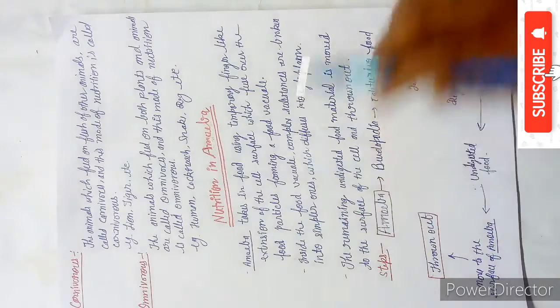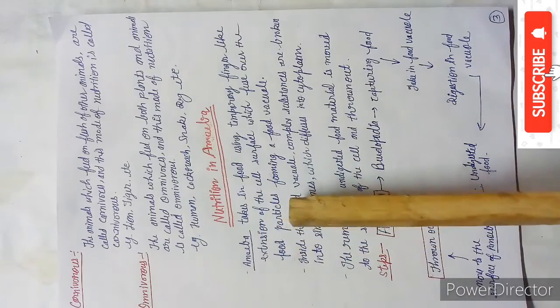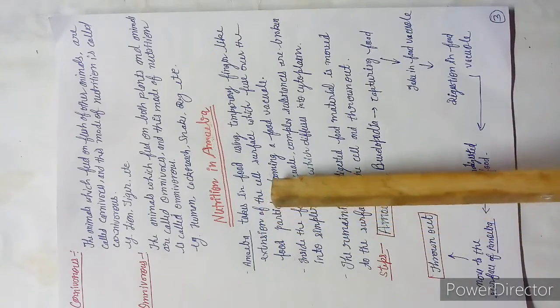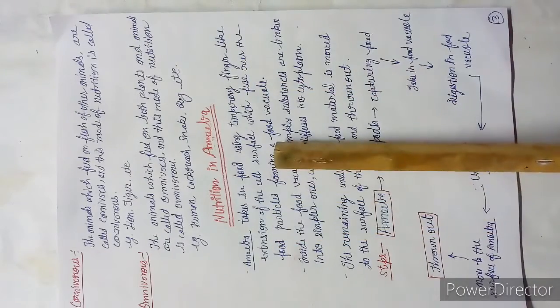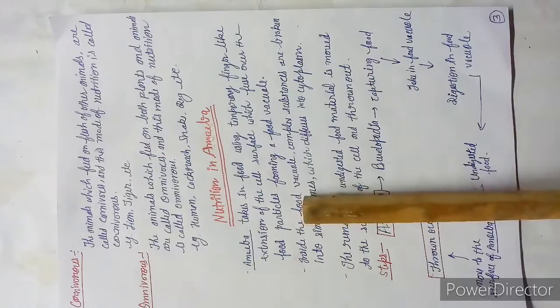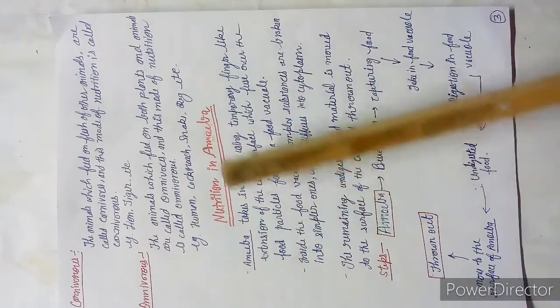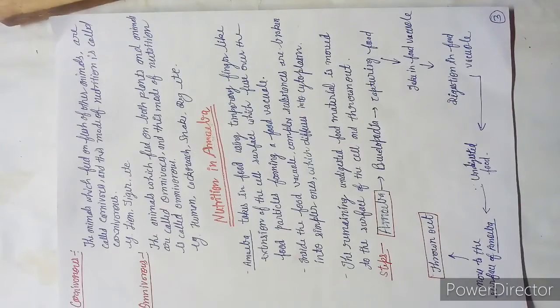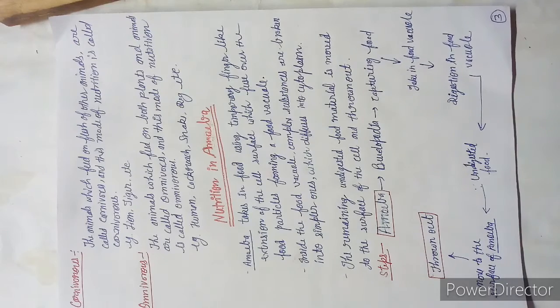Let us start with the first point. Amoeba takes in food using temporary finger-like extensions of the cell surface which fuse over the food particles, forming a food vacuole. I have underlined amoeba because this is a scientific name.